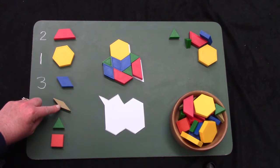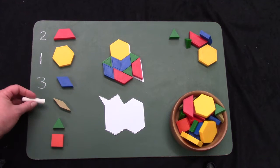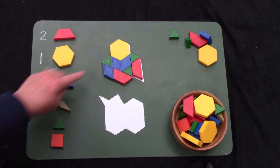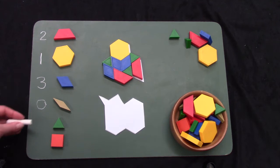What about the tan rhombus? Oh, how many? I don't have any. And then we have triangles. One, two, three. I have three triangles.